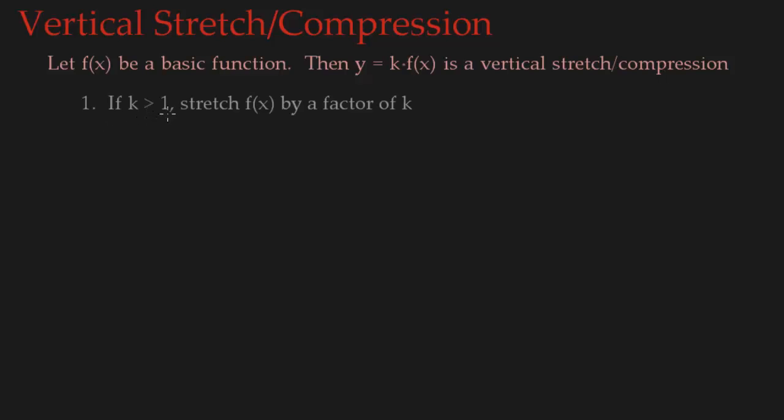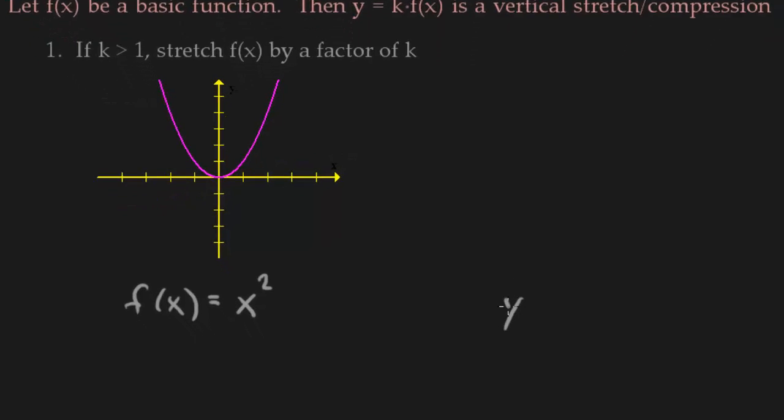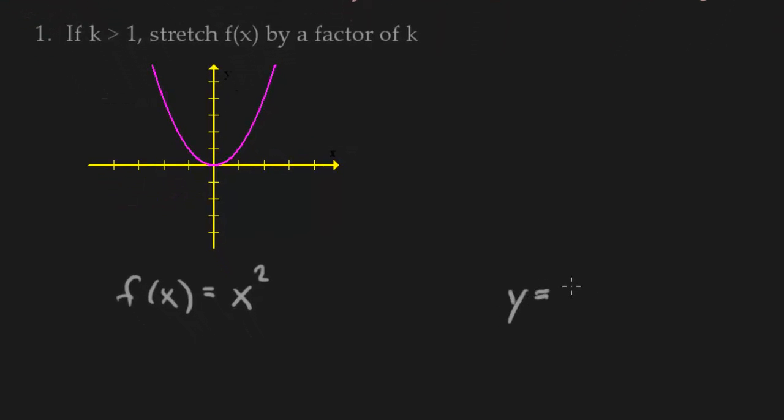So if k is greater than 1, we're going to stretch f of x by a factor of k. I think it's easiest just to look at an example. So let's go ahead and graph x squared again. And I want to try graphing something that has the form, let's do 2 times x squared. So notice that k, right here, k is 2, which is definitely greater than 1. So it's going to be a vertical stretch.